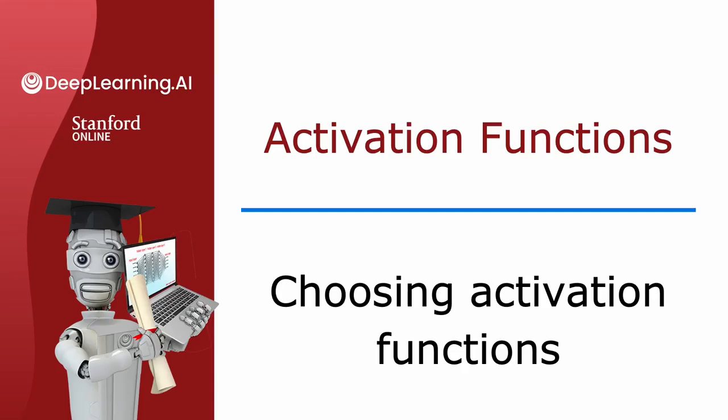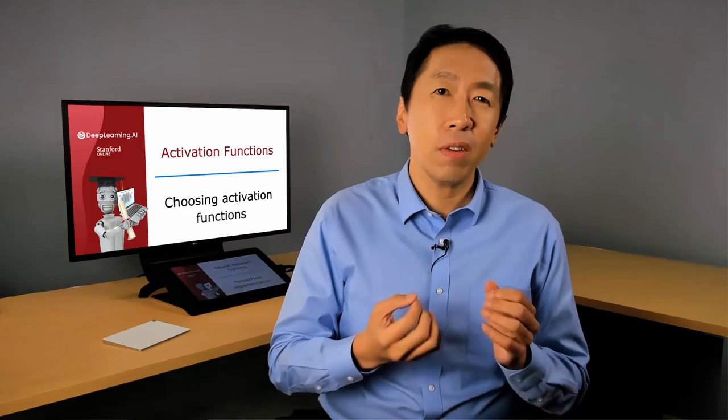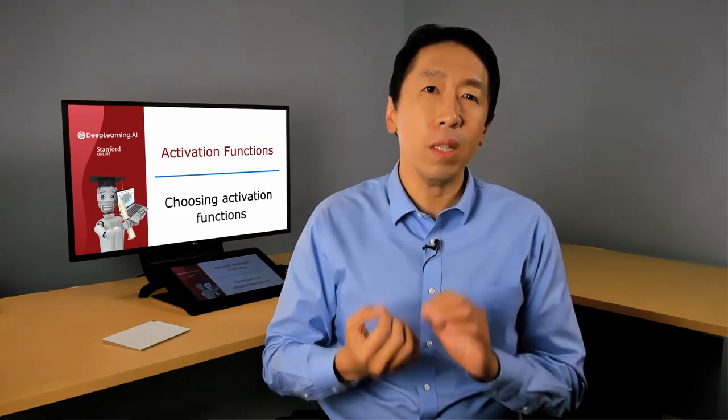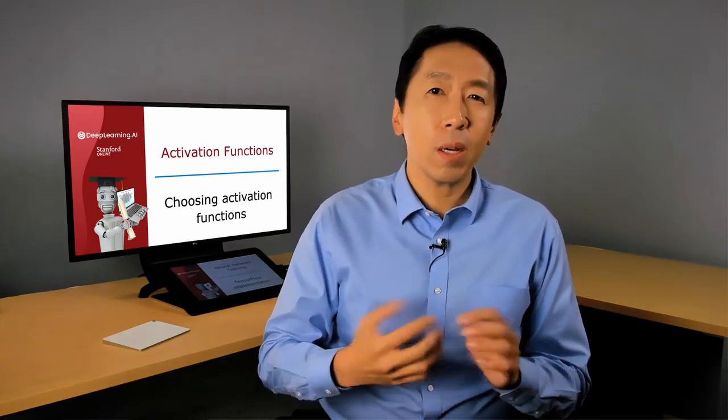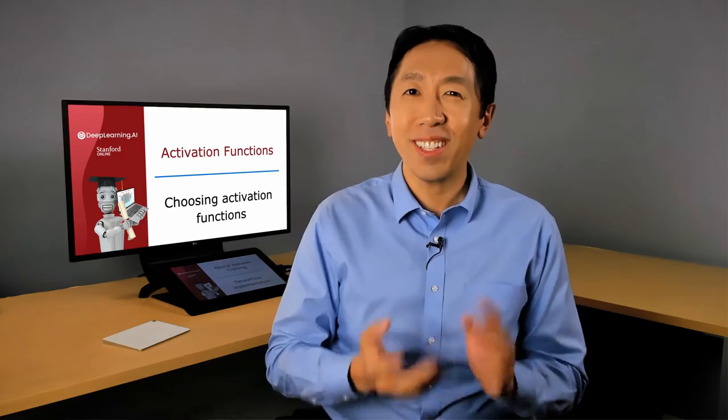Let's take a look at how you can choose the activation function for different neurons in your neural network. We'll start with some guidance for how to choose it for the output layer. It turns out that depending on what the target label or ground truth label is, there will be one fairly natural choice for the activation function for the output layer. We'll then look at the choice for the hidden layers as well.